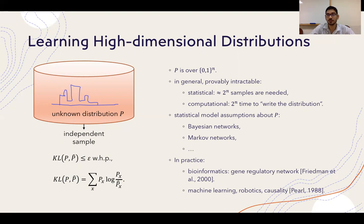Now in general, this problem of learning high-dimensional distributions is known to be provably intractable in the following two senses. Firstly, statistically it is known that 2^n samples are needed in the worst case. And computationally, even to write the distribution p-hat we need 2^n time in general.